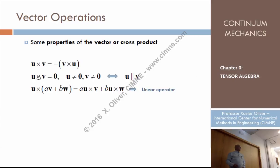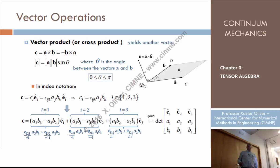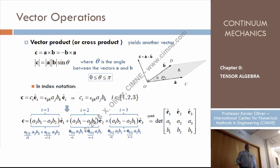If the vector product of two vectors is zero, that means something interesting: the two vectors are parallel. If the two vectors have a modulus different from zero, and the result is zero, that means the angle theta is zero — sine of theta equals zero. So if the cross product of two vectors is zero, the angle theta is zero, meaning the two vectors are parallel to each other. Not the same — parallel to each other.